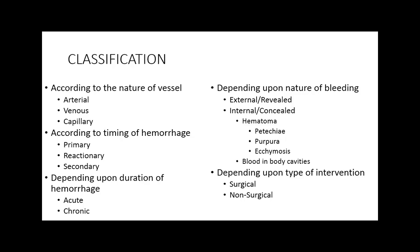Depending on the duration of hemorrhage: if there is a basic reason and bleeding occurs acutely but over a long period of time there is slow, gradual blood loss, then it is usually called chronic hemorrhage.